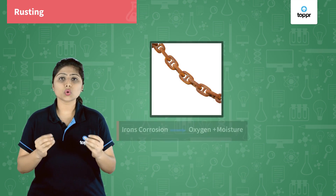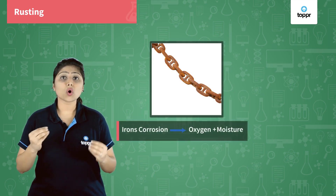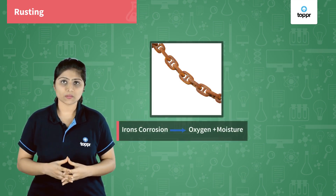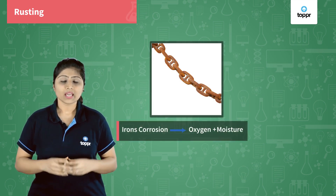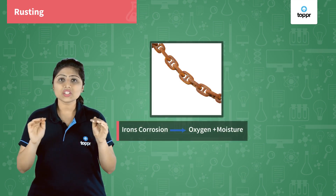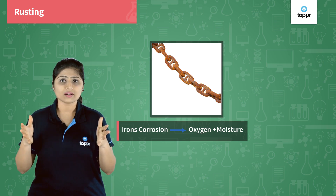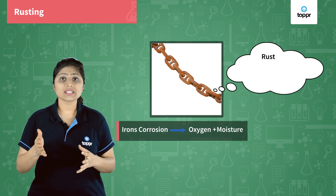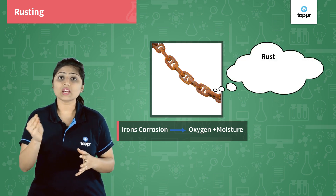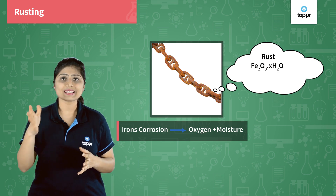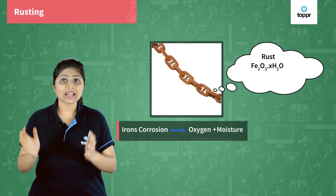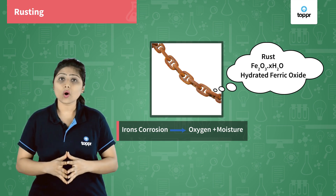Iron gets corroded because of oxygen and moisture present in the atmosphere. A reddish-brown colored layer forms on iron called rust, which is nothing but ferric oxide — Fe2O3·XH2O — hydrated ferric oxide.